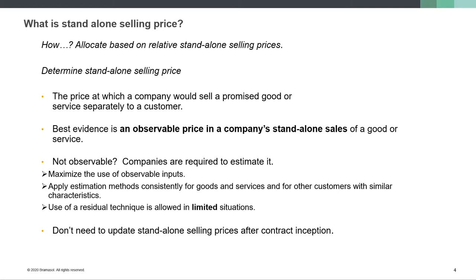So what is the best evidence of standalone selling price? The best evidence is an observable price in a company's standalone sales of a good or service. An observable price means: when you have an unbundled good or service, what is a customer willing to pay for that? In today's digital economy, many things are being bundled, and sometimes it's not as intuitive to bifurcate the goods and services and obtain a standalone selling price — so that is a challenge.